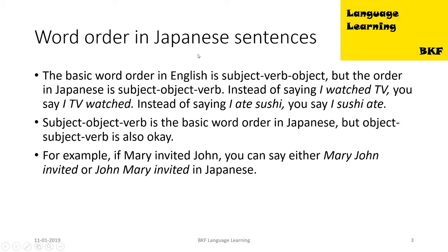Word order in Japanese sentences. The basic word order in English is subject, verb, object, but the word order in Japanese is subject, object, verb. Instead of saying 'I watched TV' you are going to say 'I TV watched', or instead of saying 'I ate sushi' you are going to say 'I sushi ate'.